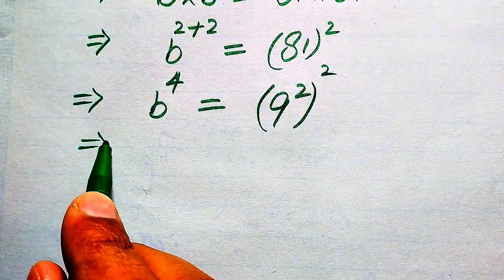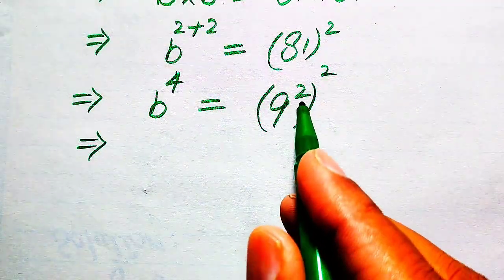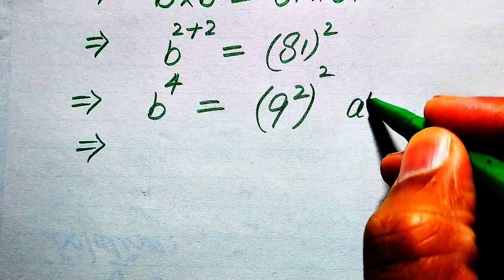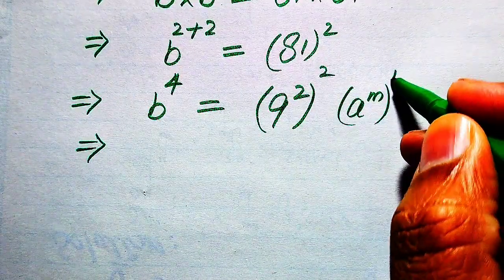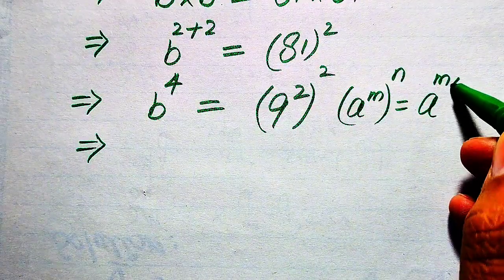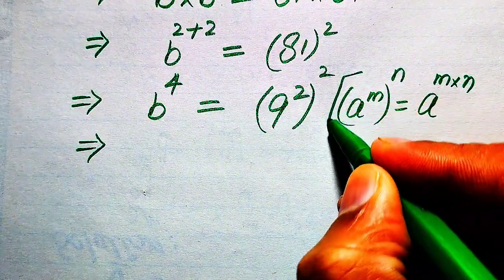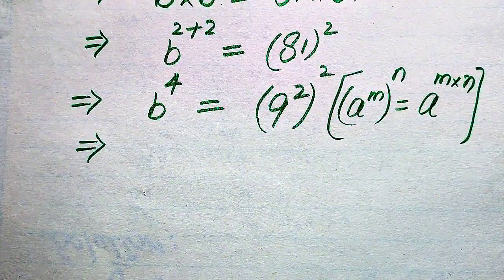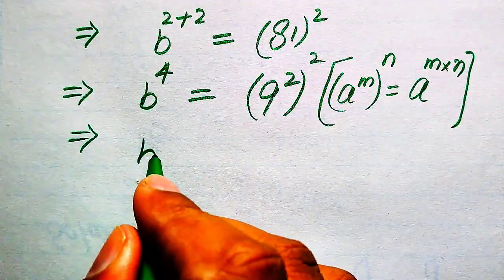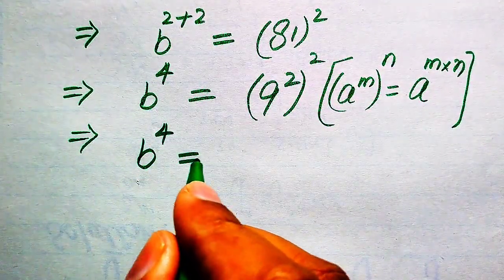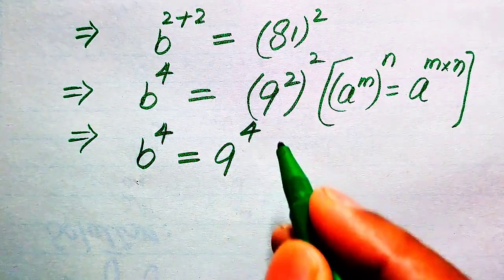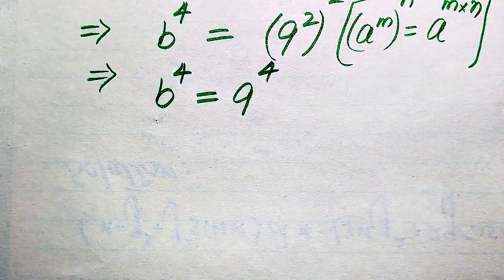Here we have exponent to the exponent, so we apply the exponential law: if we have a to the power of m to the power of n, it equals a to the power of m times n. According to this rule of exponents, we multiply the two exponents, giving b⁴ equals 9 to the power of 2 times 2, which becomes 9⁴.